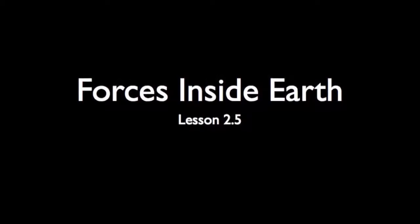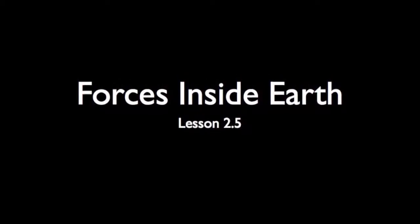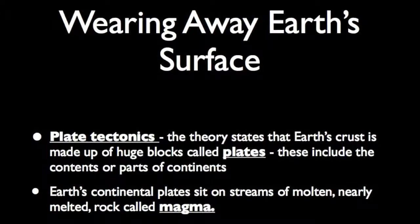Forces deep inside Earth are constantly reshaping its surface. The theory of plate tectonics states that Earth's crust is made up of huge blocks called plates. Plates include continents or parts of continents along with parts of the ocean floor. Earth's continental plates sit on streams of molten, nearly melted rock called magma. Some scientists believe magma acts as a conveyor belt, moving the plates in different directions. Plates may move only an inch or two, a few centimeters, a year. This movement slowly builds mountains — when two plates push against each other, the pressure makes the crust bend to form steep mountains.